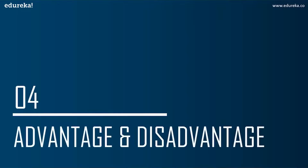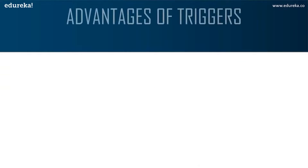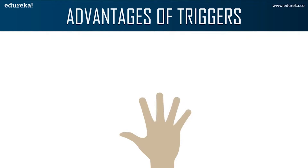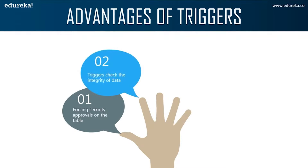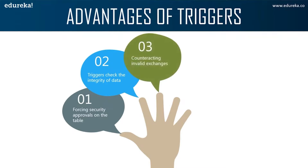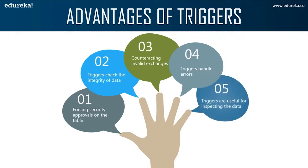Let's move to the next topic: advantages and disadvantages. The advantages of a trigger are: first, forcing security approvals on tables present in the database; second, triggers provide another way to check the integrity of the data; third, triggers counteract invalid transactions; fourth, triggers handle errors from the database layer; and finally, triggers can be useful for inspecting data changes in the table.